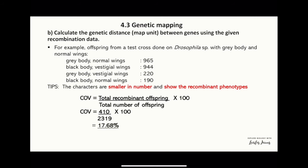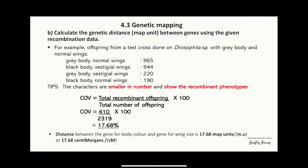That gives us 17.68 percent. For the distance, we convert the percentage into map units or centimorgans. The distance between the gene for body color and the gene for wing size is 17.68 map units, or 17.68 centimorgans.